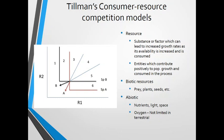To start out, let's define what a resource is. According to your book, there are two definitions: a substance or factor which can lead to increased growth rates as its availability is increased and consumed, or entities which contribute positively to population growth and are consumed in the process. Basically, it's something that gets consumed, eaten up, taken up, and makes the population grow. There can be biotic resources — things like prey animals, plants for herbivores, seeds — and abiotic resources such as nutrients, light, and space.